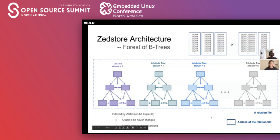I wanted to talk about the benefits of this design. First of all, B-tree is a fast and versatile data structure. In the Postgres world and other databases, we have already used it widely for indexes. So we think it would be really cool to leverage the same data structure as a column store.